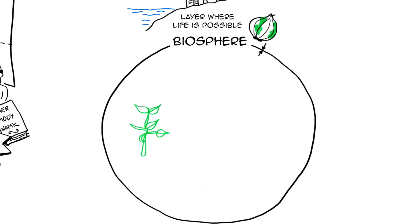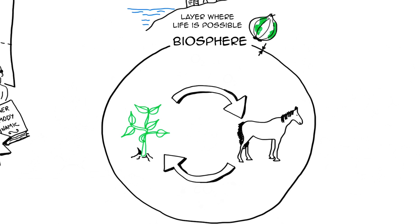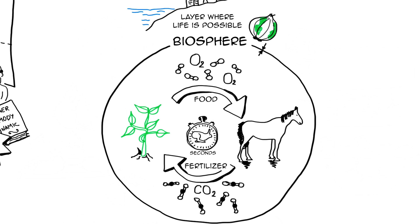And within this biosphere, there are plants and animals. Plants produce oxygen and food which are consumed by the animals. And in return, the animals produce fertilizer and CO2, carbon dioxide, which are used by the plants. And we have a cycle that is well-balanced. So this is a very quick cycle. We eat every day and we breathe every second. But it works really well.